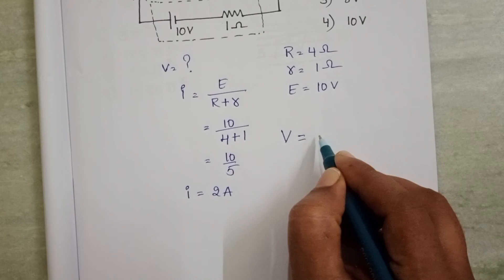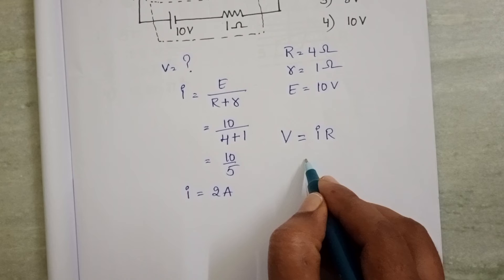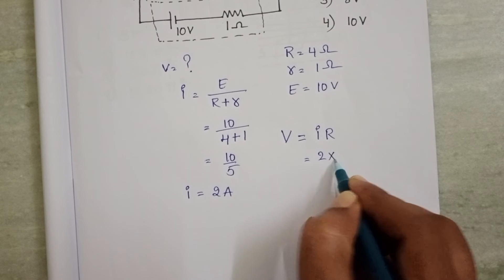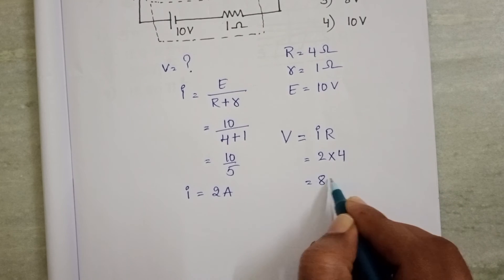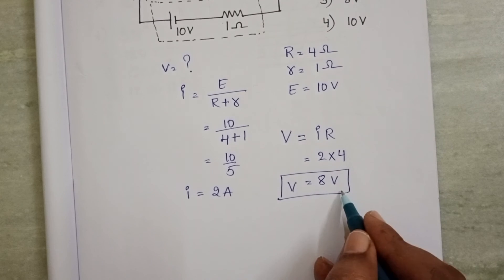Now, V equals I into R where R is the external resistance. 2 into external resistance 4 ohm equals 8V. Terminal voltage is equals to 8V. Third option is correct.